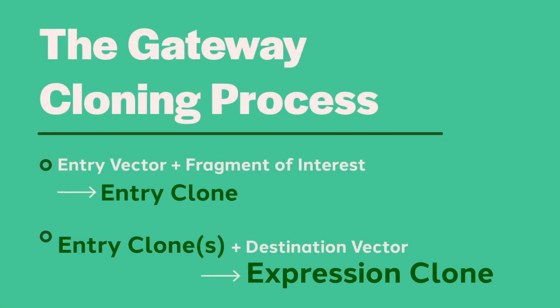Gateway cloning is built on a series of plasmids called entry vectors and destination vectors. Entry vectors are used to capture a gene or gene fragment of interest to create an entry clone. When performing gateway cloning, you will create one or more entry clones. One to four entry clones can be introduced into a destination vector, and the outcome is your desired expression clone. The system is designed to allow you to rapidly and easily rearrange multiple entry clones without the need to reclone the actual insert.